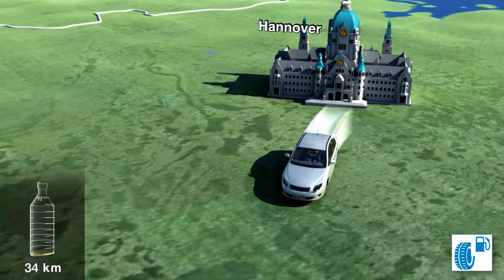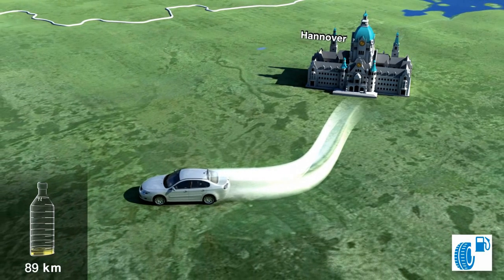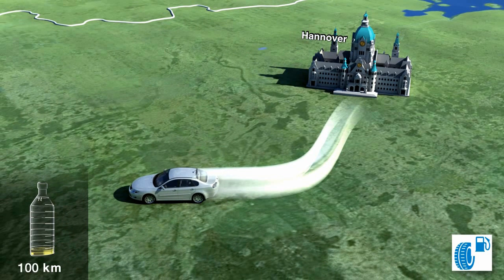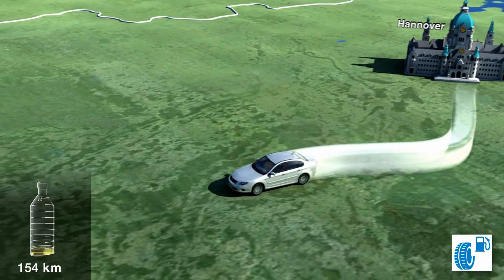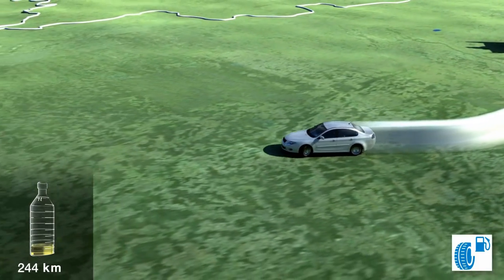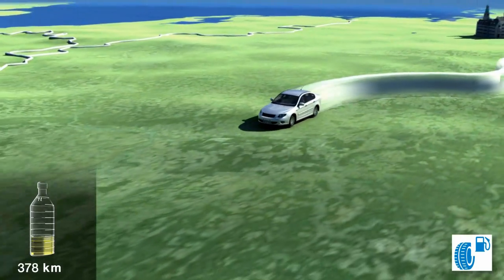The test begins in Hanover. A tyre from fuel category C uses almost exactly 0.1 more litres of fuel over a distance of 100 kilometres or 62 miles than a tyre from category B. But does this also apply to long distances? To find this out, the journey continues south.